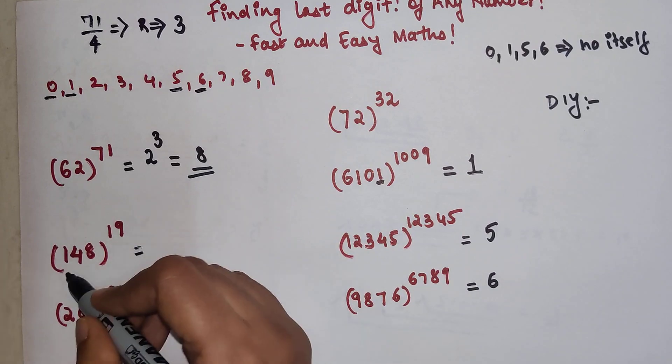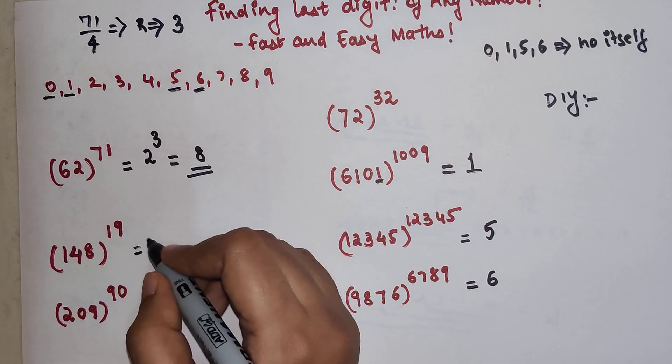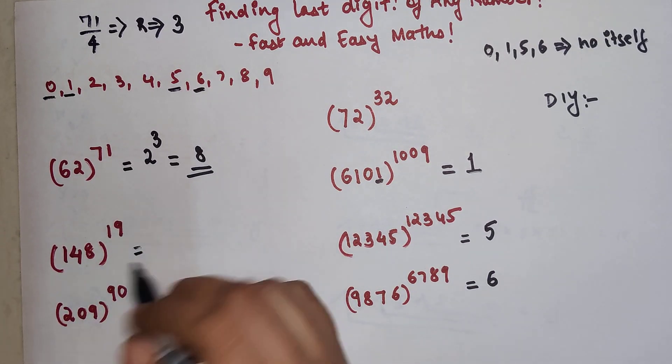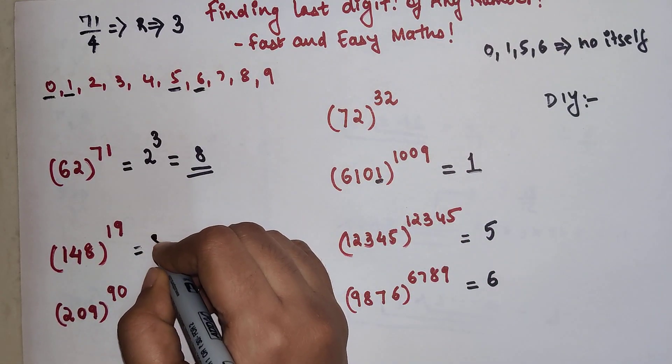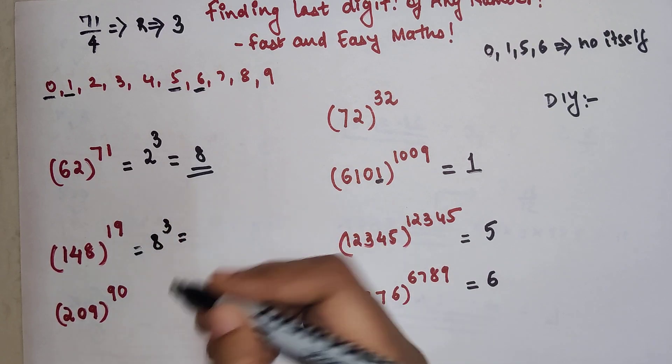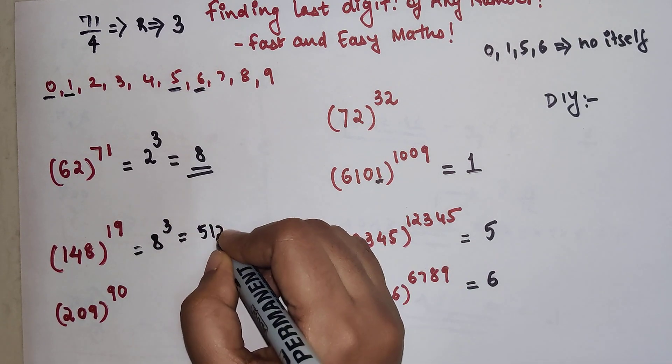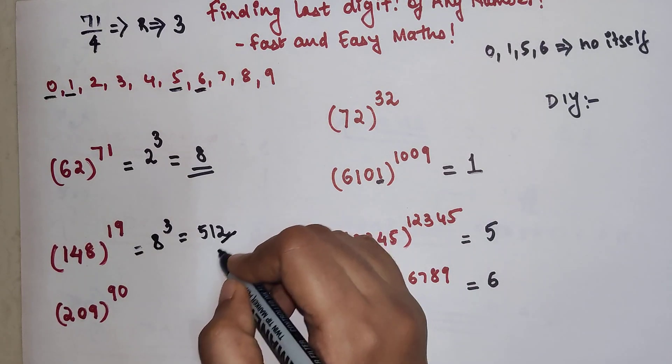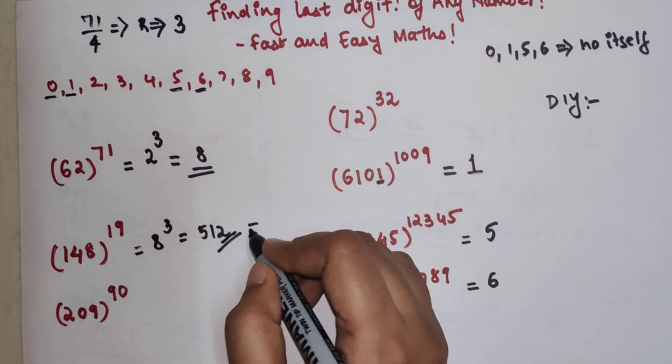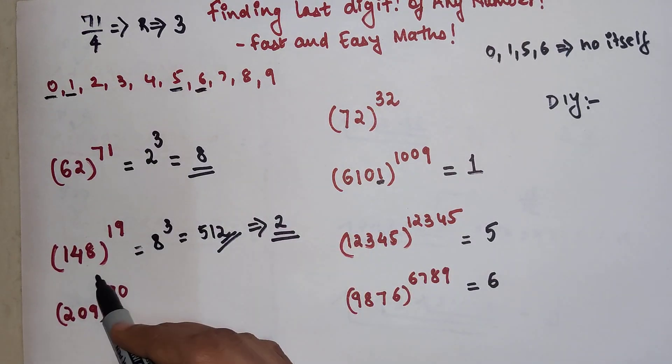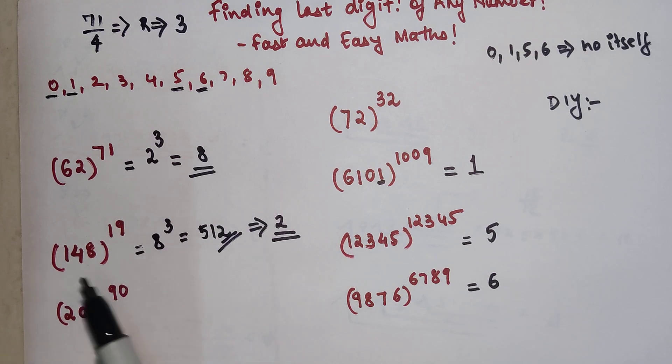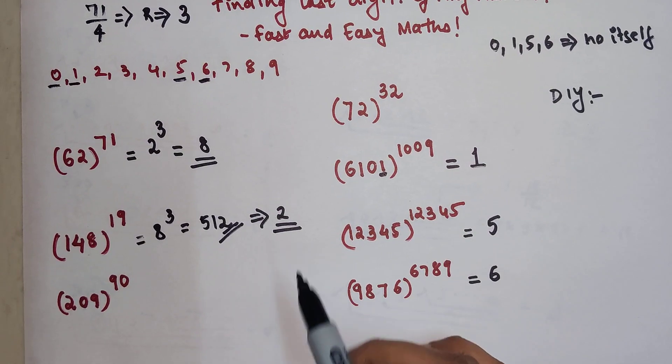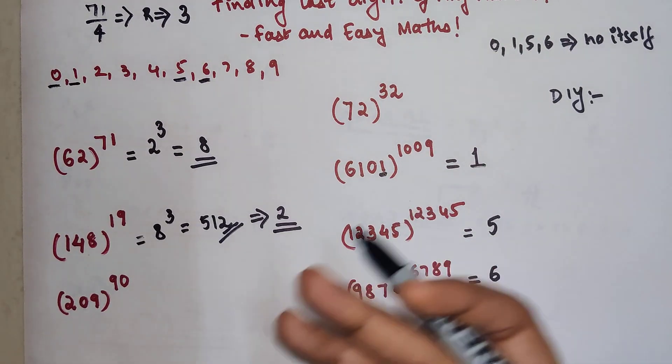Here we have 148 raised to 19. When you divide 19 by 4, the remainder is 3. So 8 raised to 3 gives 512, but you need the last digit. The last digit is 2, so your actual answer is 2 for this particular question, meaning when you do 148 raised to 19, the unit digit of that entire answer will be just 2.